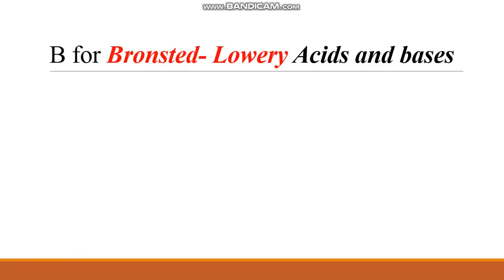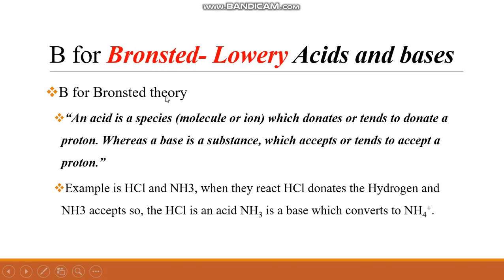B is for Brønsted-Lowry acid-base theory. In Arrhenius we talked about hydrogen ions and hydroxyl ions, but what if there are no hydroxyl ions? Then we talk about hydrogen ions only. An acid is a species — molecule or ion — which donates or tends to donate a proton, whereas a base is a substance which accepts or tends to accept a proton. For example, HCl can donate a proton and NH3 can accept a proton.